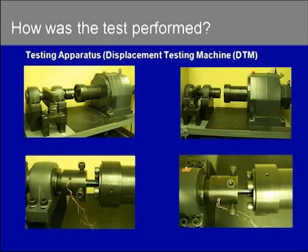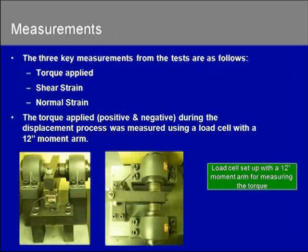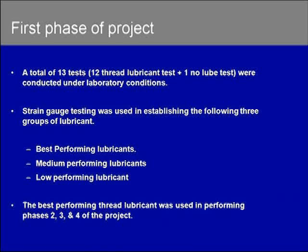The wires coming out of the strain gauges feed into the data acquisition system, which had the capability to plot about 10,000 data points per second. The three key measurements for this project were torque, shear strain, and normal strain. Normal and shear strain were measured using the strain gauges, and torque was measured using a load cell with a moment arm of 12 inches. The goal of phase one was to determine the best thread lubricant for the rod coupling makeup application; to achieve this, we tested about 10 to 12 commonly available thread lubricants and studied their performance.